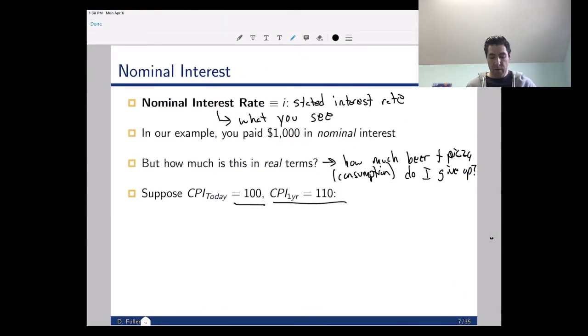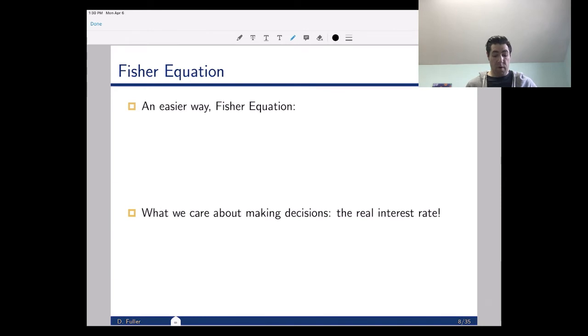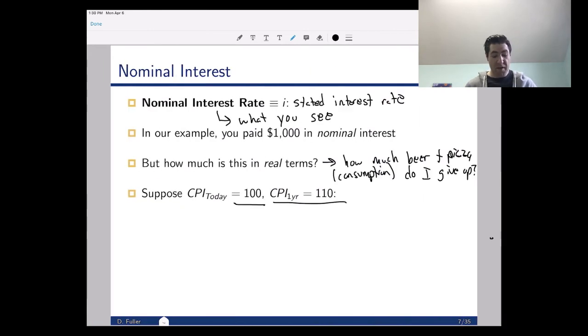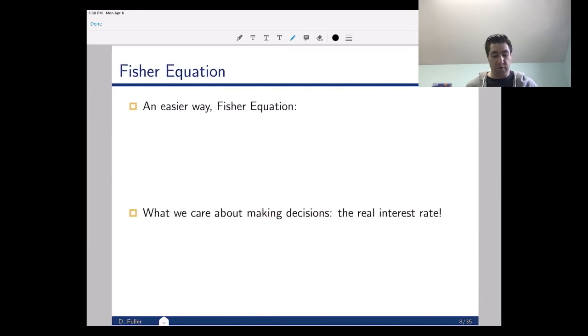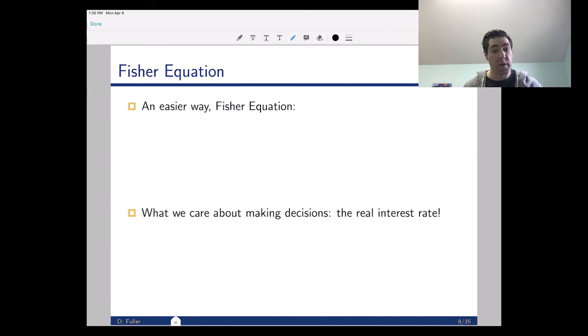That's going to be a bit of a pain. If every time I wanted to do this I had to convert things and calculate total amount of interest converted to real, I may not be willing to do that. So there's a shorthand way to do it, which we call the Fisher equation. I'm going to call r the real interest rate and I'm going to call π the inflation rate.